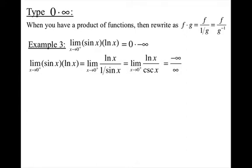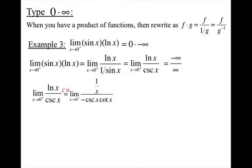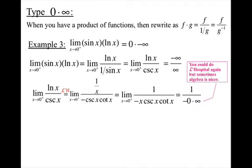I get negative infinity over infinity — one of my original indeterminate forms — so I can apply L'Hopital's Rule, taking the derivative of the top over the derivative of the bottom. After simplifying, when I plug in 0, I get negative 0 times infinity on the bottom, which is still an indeterminate form. So I'll either use L'Hopital's Rule again or try algebra, since three functions multiplying together would give a messy product rule.